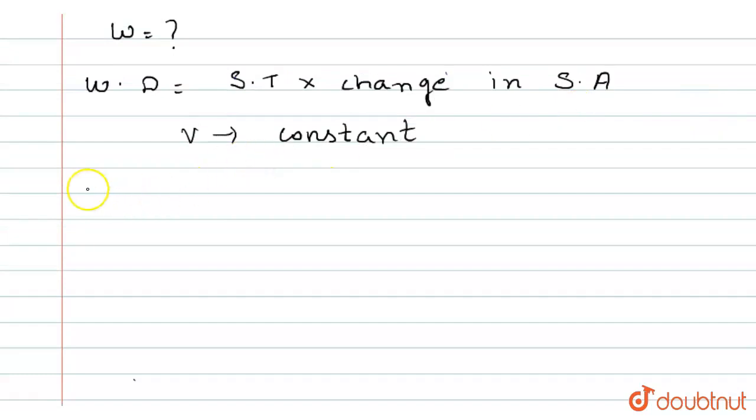So first of all we have to find n. For this case, n into volume that is 4 by 3 pi r cube equals 4 by 3 pi capital R cube, because volume is constant in both cases. 4 by 3 pi cancel. Now we have n r cube equals capital R cube.